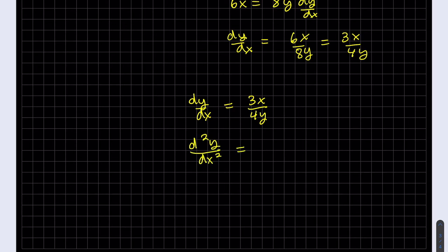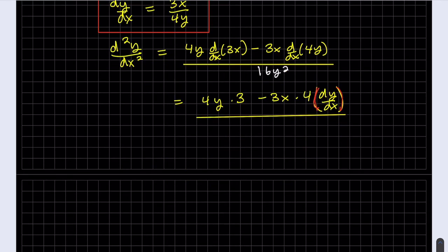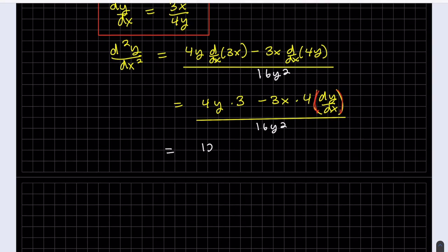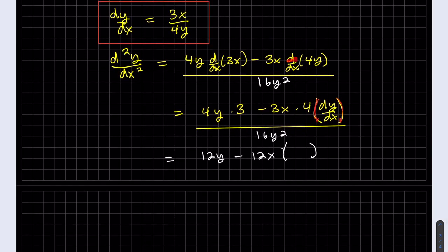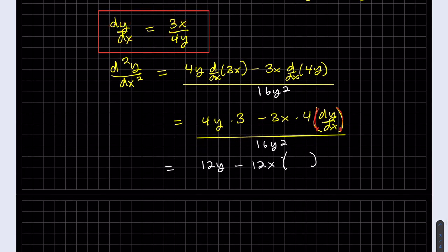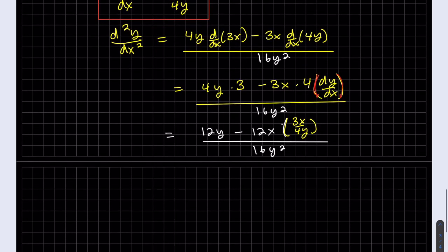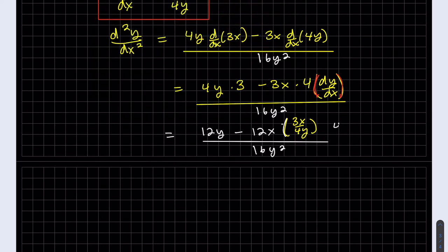We'll have to use the quotient rule. 16y squared on the bottom, we're going to square both. Now we have dy/dx in our formula for a second derivative because we had to chain rule the 4y. It's 4 times the derivative of the inside. But we do know what dy/dx is equal to, it's 3x over 4y. So I do just want to clear this fraction because I have a fraction within a fraction. We'll multiply top and bottom by 4y and distribute it.